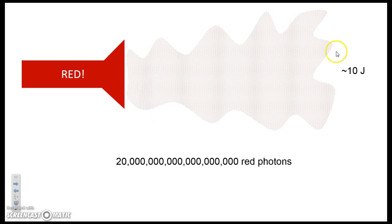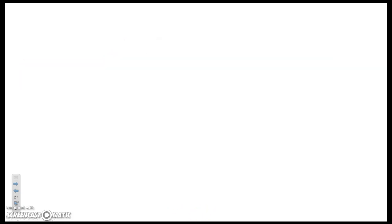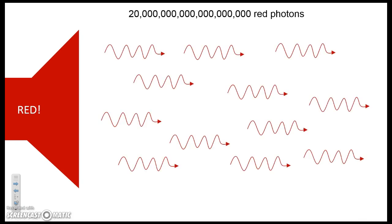So light is not just one giant continuous wave. It's a bunch of tiny little photons. We could represent each photon as one small little wave. So when you shine your red flashlight, a bunch of tiny photons come out. Each photon has a tiny little bit of energy.